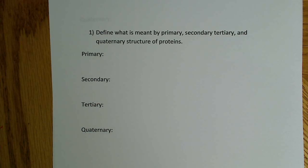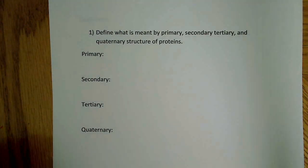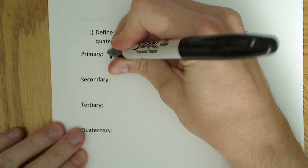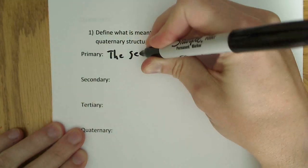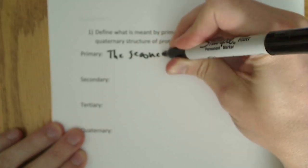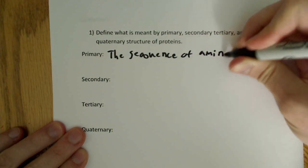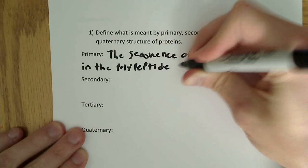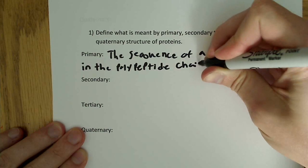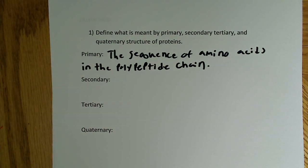So what is meant by the primary structure of proteins? Well, that's the sequence of amino acids in the polypeptide chain. That's really simple — you can just say the sequence of amino acids in the polypeptide chain.